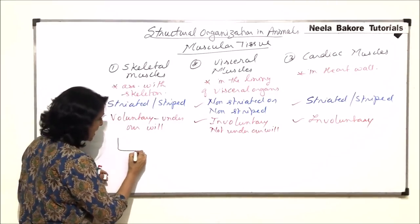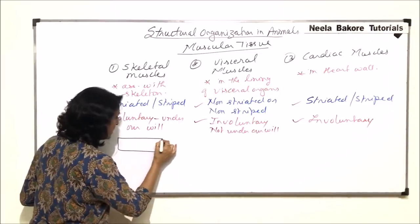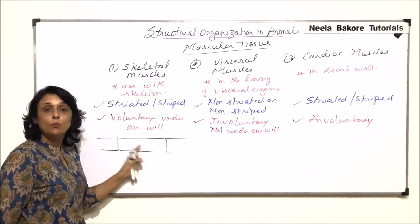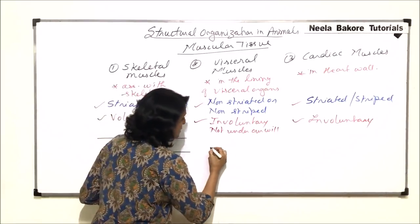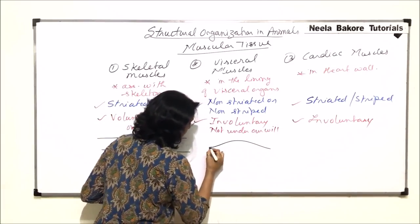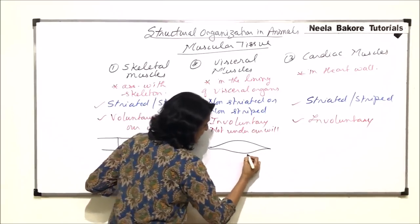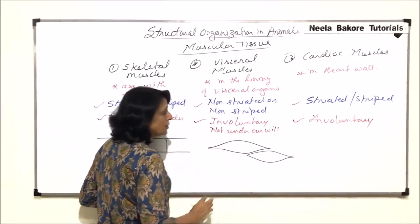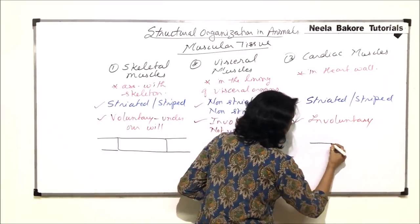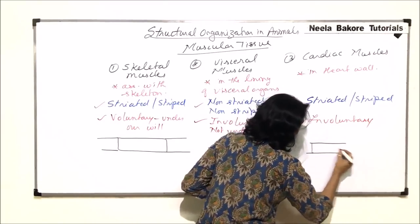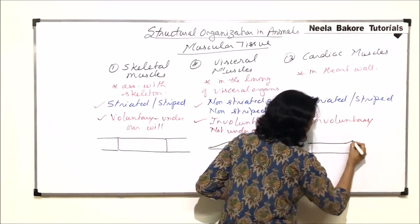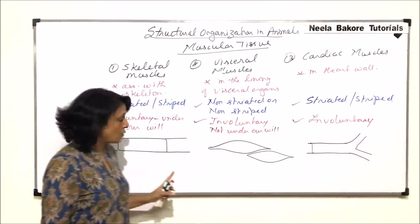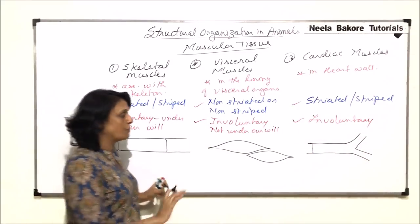Striated muscle fibers are long and cylindrical. In the case of visceral muscles, the muscle fiber is spindle-shaped. Cardiac muscle fibers are also long and cylindrical, but they show branching, whereas in the case of skeletal muscle, there is no branching.